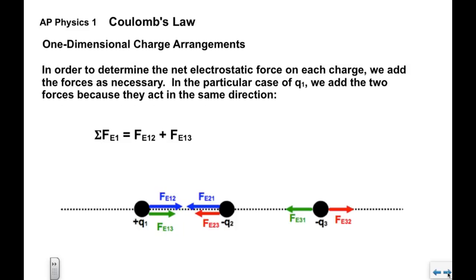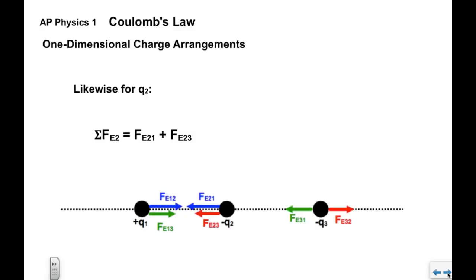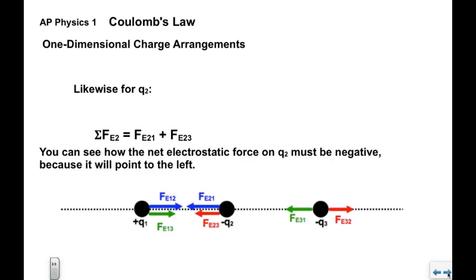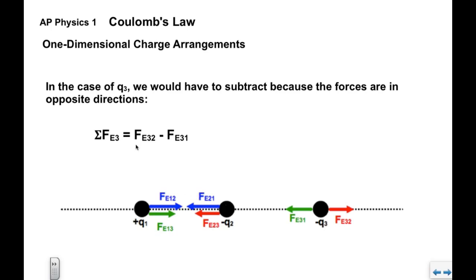The net electrostatic force on each charge is found by adding the forces. For Q1, both Fe12 and Fe13 point to the right, so the sum sigma Fe1 equals Fe12 plus Fe13, both positive. For Q2, both forces point to the left, so the net electrostatic force also points left. For Q3, the sum of electrostatic forces equals Fe32 minus Fe31, since Fe32 is positive and Fe31 is negative.